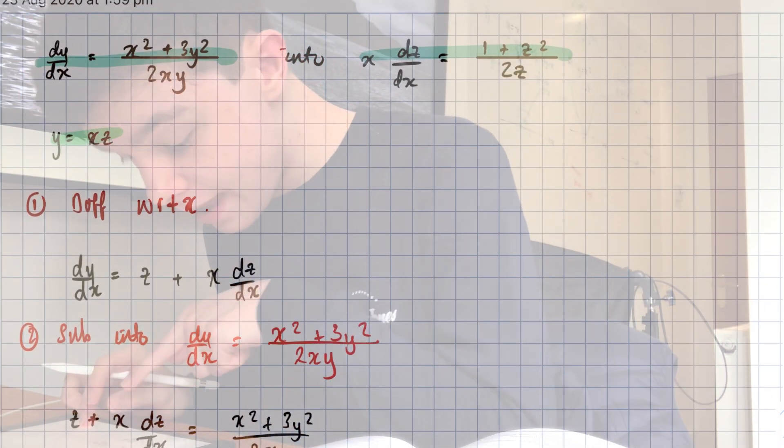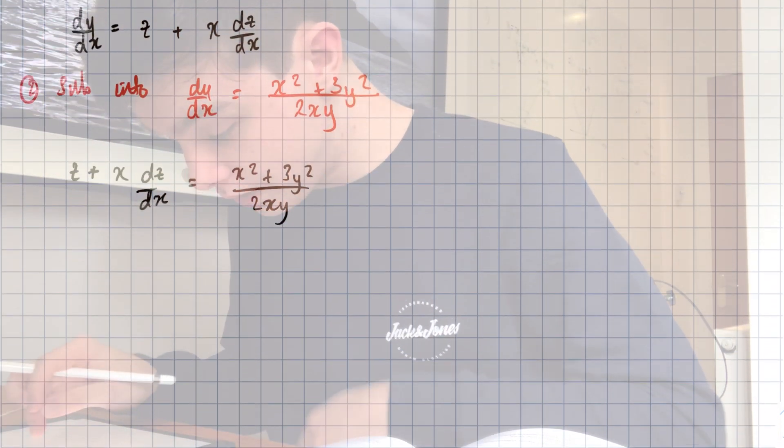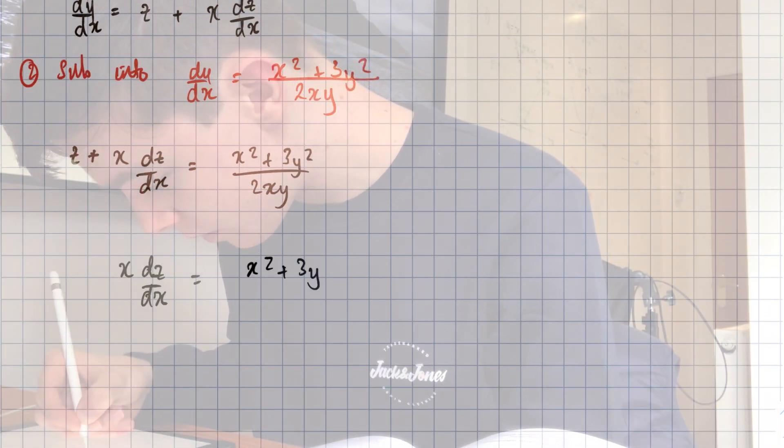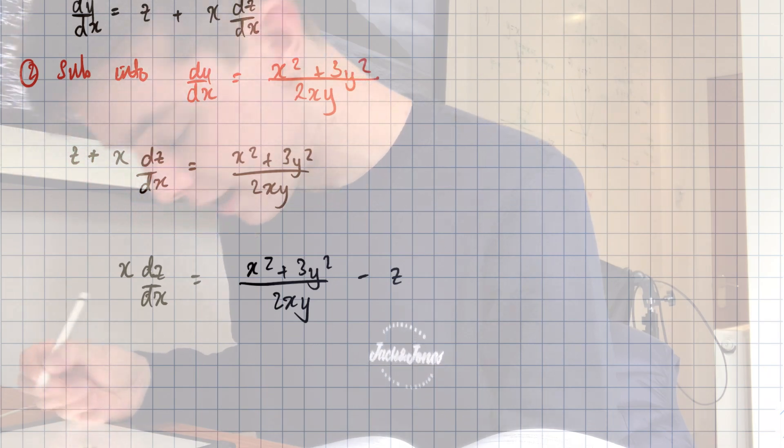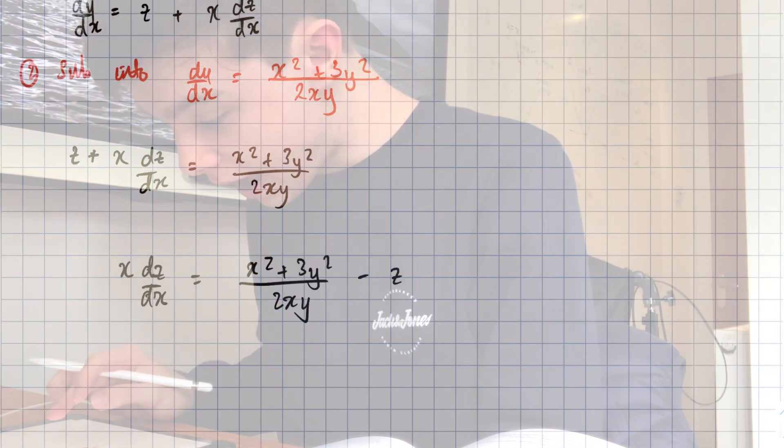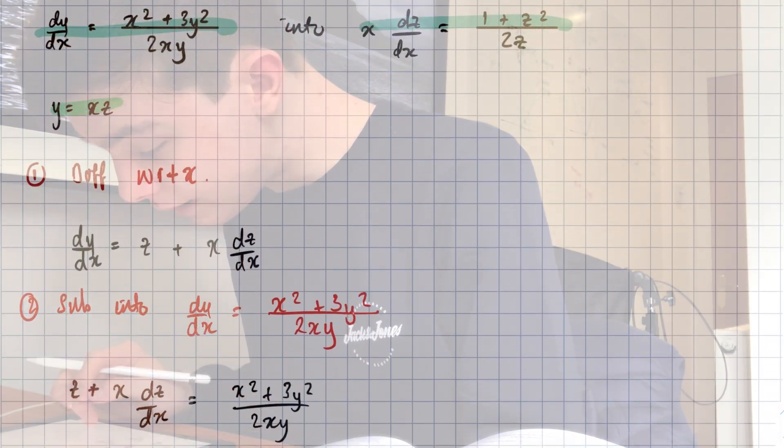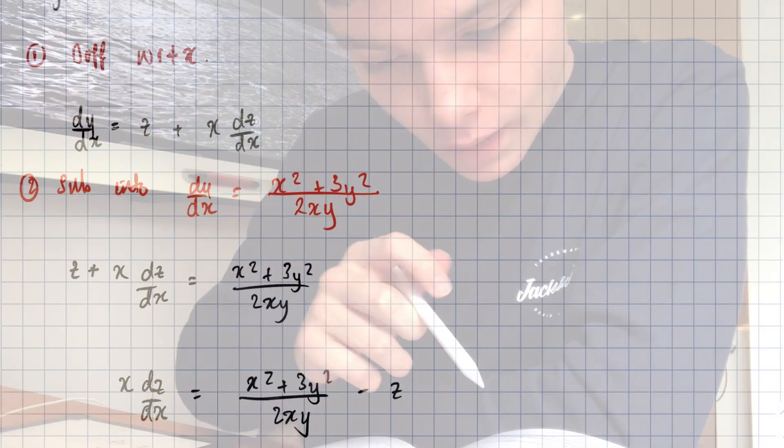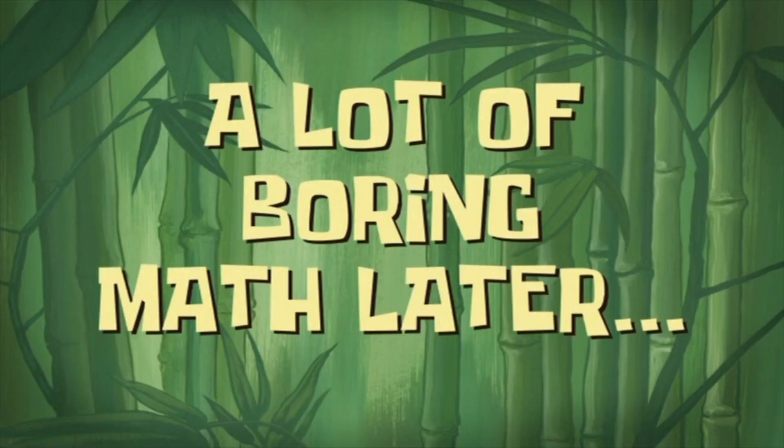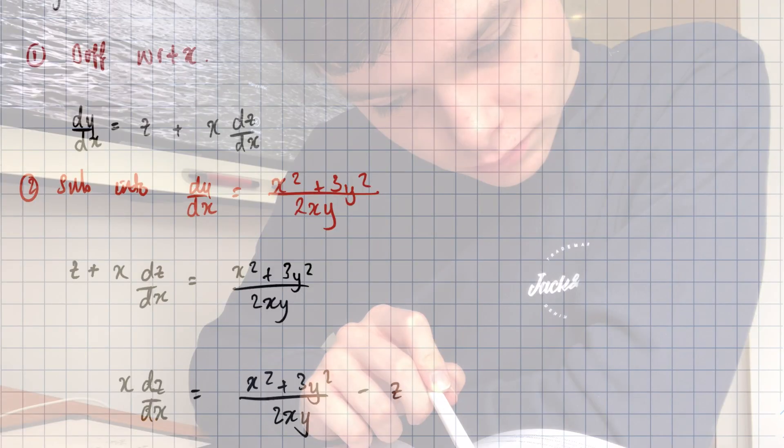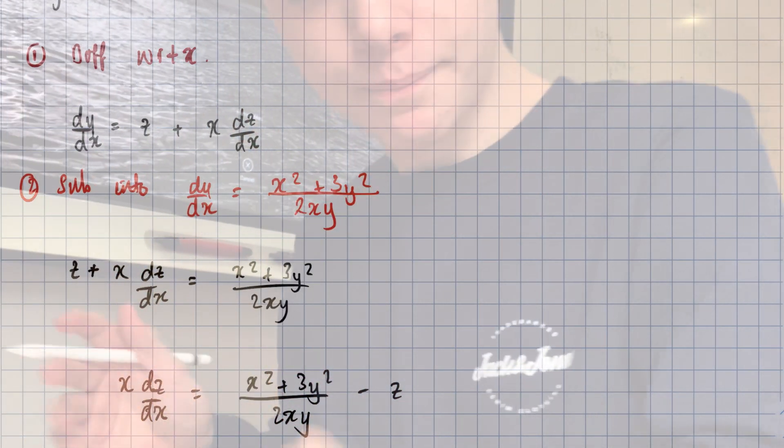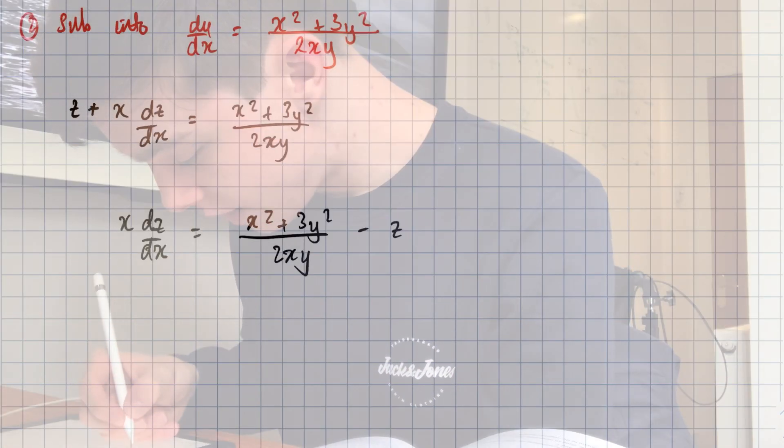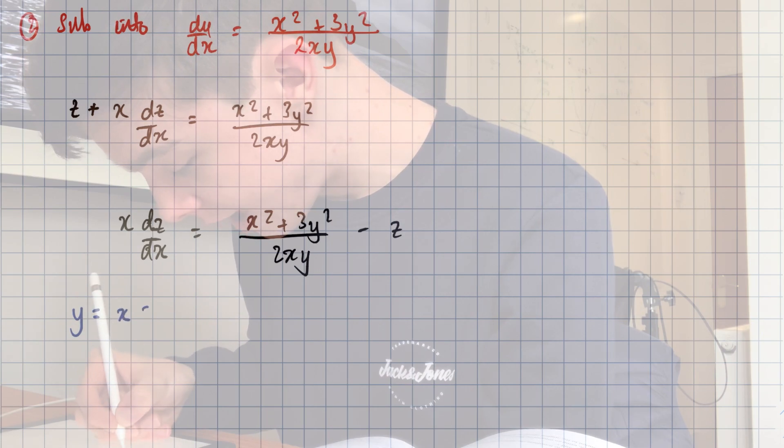Yeah. And then, we need to get X DZ on its own. Minus Z, is that right? And what happens, what do we need? We need a Z. I'm confused here. A lot of boring math, little. Ah. We know that Y equals X times Z. Is that right?